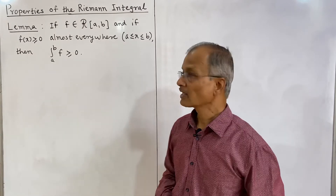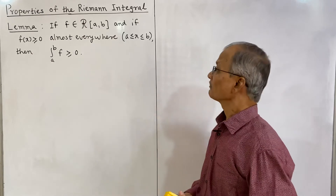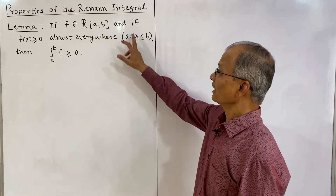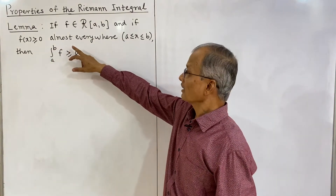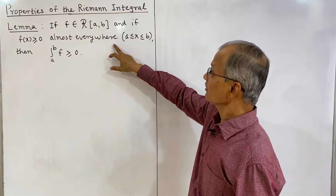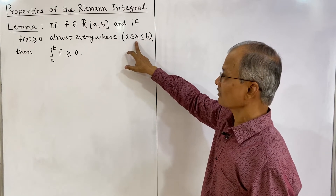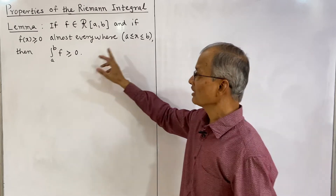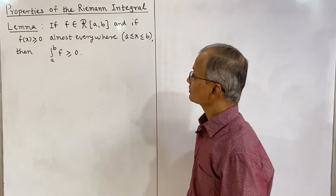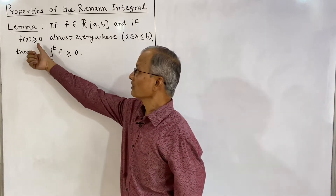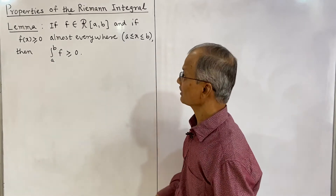First, we shall study this lemma. I have written the statement of the lemma: If f is a Riemann integrable function on the closed bounded interval [a, b] and if f(x) is greater than or equal to 0, that is non-negative almost everywhere in the interval a to b, then the integral of f is greater than or equal to 0. So if f ≥ 0, then the integral of f is also ≥ 0. That we have to prove.